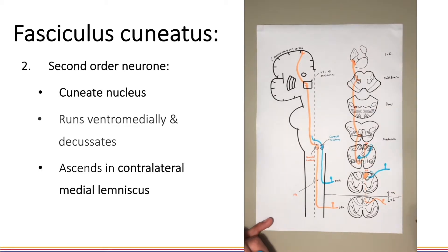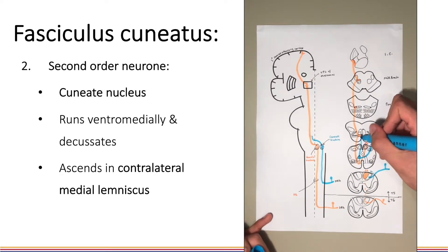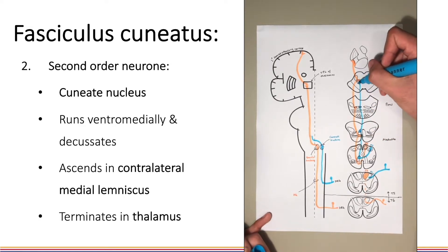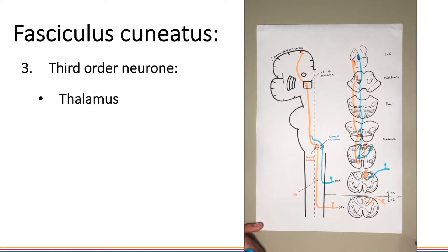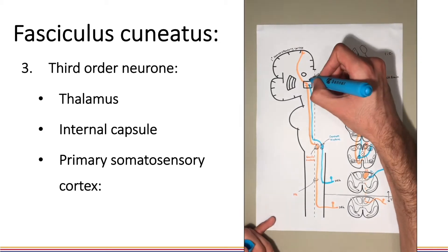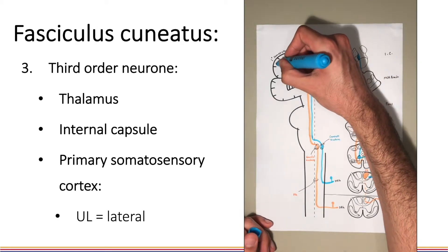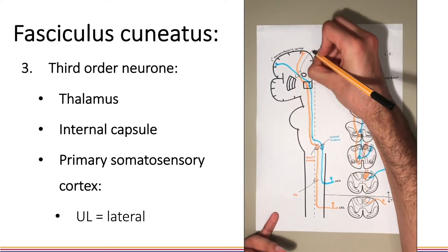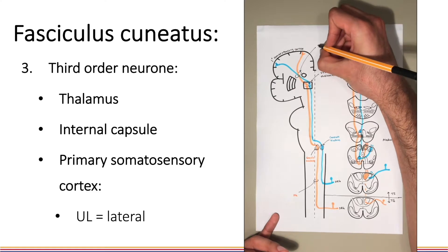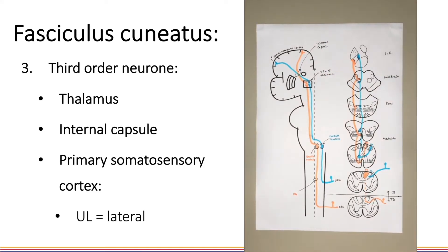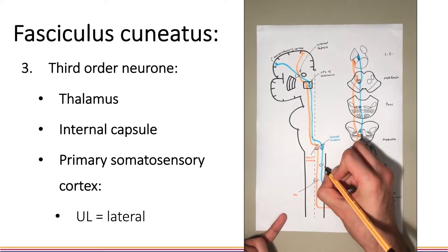Here we can see the decussation of the second order neuron after its origin from the cuneate nucleus. This second order neuron also ascends through the brain stem to the VPL of the thalamus where again it synapses with the third order neuron that passes to the somatosensory cortex through the internal capsule, this time delivered more laterally as this sensation is from the upper part of the body. Here we can see the fasciculus cuneatus next to the more medial fasciculus gracilis.